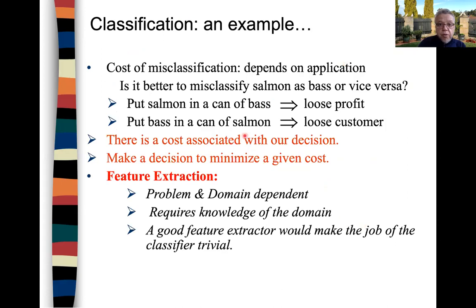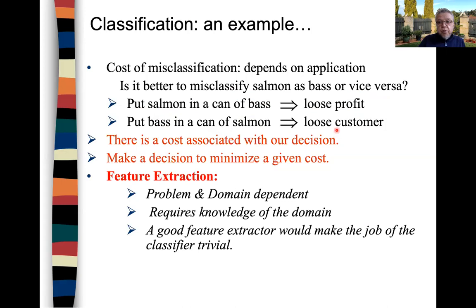When you perform classification, you have a cost of misclassification which depends on the application. Is it better to misclassify salmon or sea bass, or vice versa? If you put a salmon in a can of sea bass, you're going to lose profit because salmon is more expensive. If you put sea bass in a can of salmon, you're going to lose customers because they were expecting the more expensive fish and they get the sea bass. There is a cost associated with your decision, and you would like to make a decision to minimize a given cost. Feature extraction in general is problem and domain dependent.